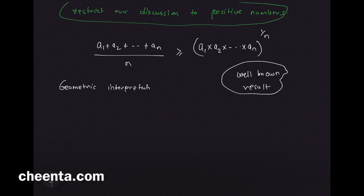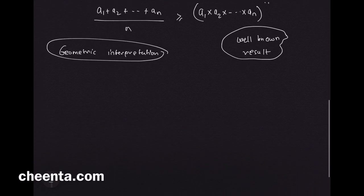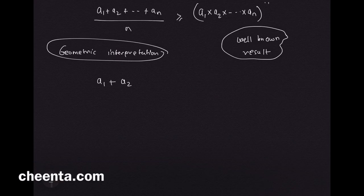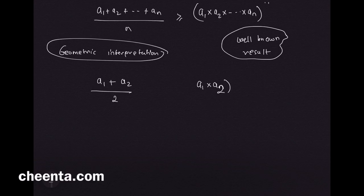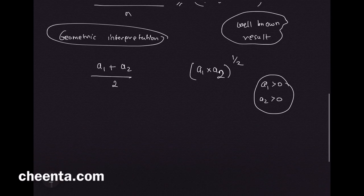We want to look at two quantities, a₁ and a₂. Their arithmetic mean is simply their sum divided by two, and their geometric mean is the product of the numbers raised to the power half. Remember a₁ is greater than 0 and a₂ is greater than 0. We are only dealing with positive quantities.